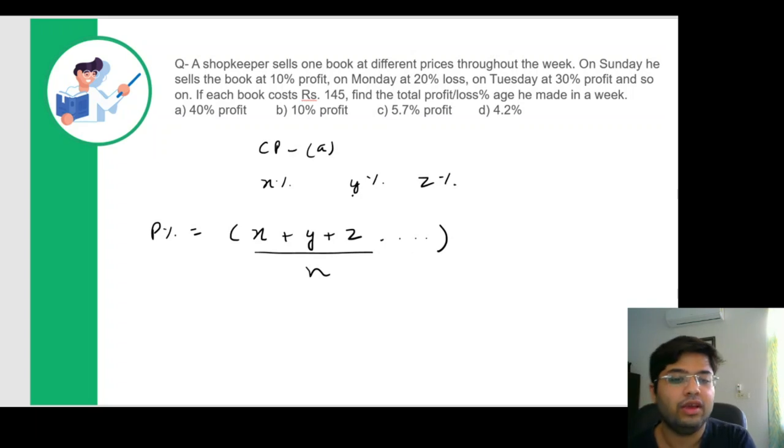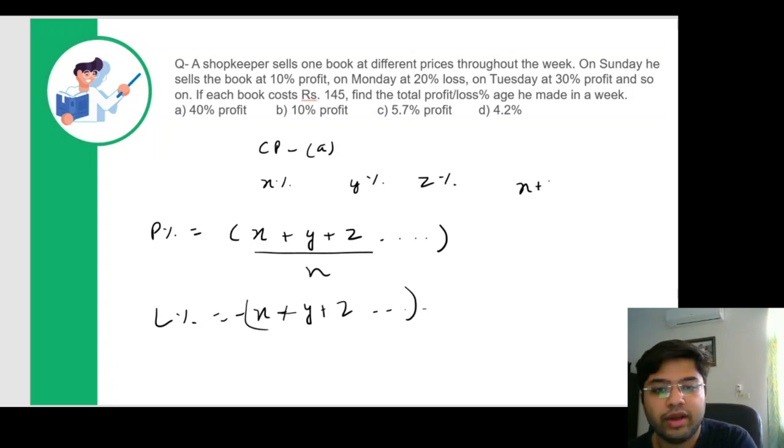Now if this is loss, so what would happen is, let's say Y percent is actually loss percentage. So it will become X minus Y plus Z. So what you need to remember is you can straight away add these profit percentages and get to the answer.